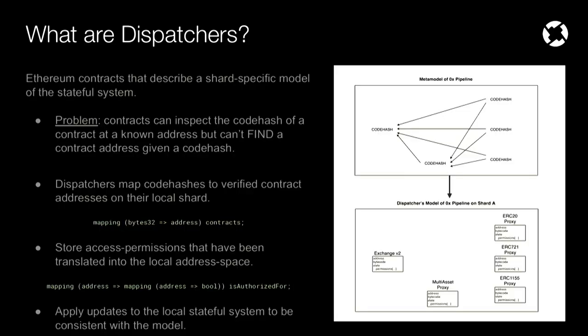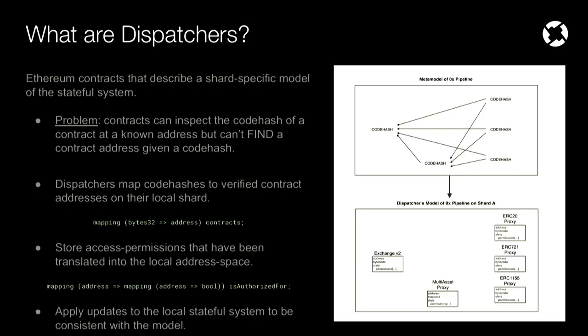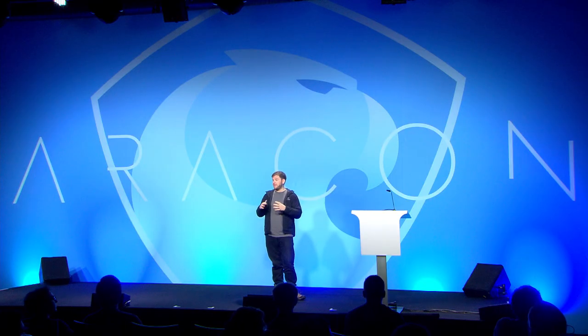The dispatcher is a single smart contract — there's one replica of it on every single chain. It stores a list of the different components within the system, mapping from their code hash to their address on the local chain. It also stores the access permissions between these code-hash-indexed contracts, mapping from one address to another address to show access permissions. And finally, it applies updates: any time the metamodel has changed, it sees that and changes its own internal model, then applies that to the actual stateful system by calling into it to modify it so that it's consistent with the metamodel.